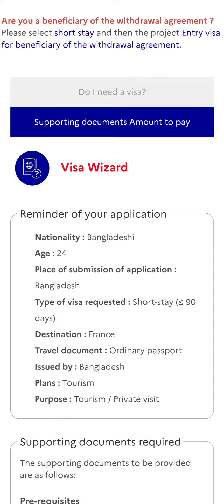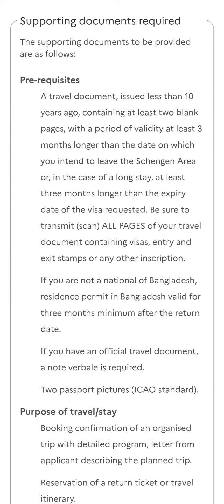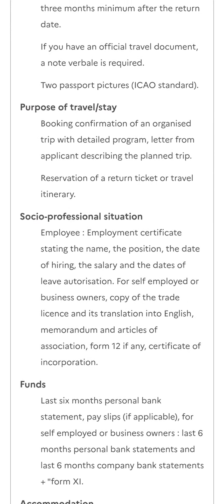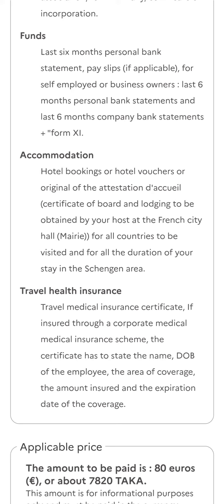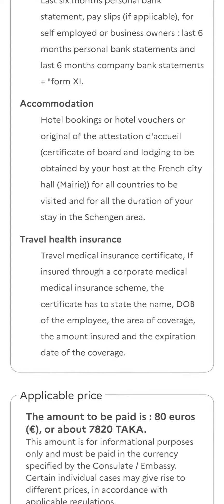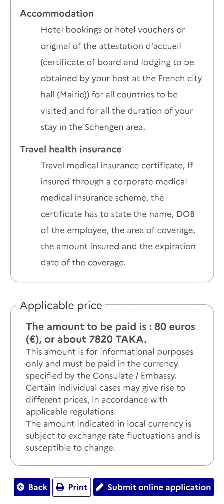Now you're given details and the documents you'll require will be shown to you. Read carefully what documents you need. You'll need a valid travel document, which is your passport. For an official passport, you'll need a note verbale. Two photos of ICAO standard — there's a specific size and clear instructions you'll find on Google. You'll need booking confirmation and travel itinerary. You should book your accommodation first and get a travel agent to book your flight or provide a flight itinerary. You'll also need documents stating your socio-professional situation, your bank statements to show your funds, hotel bookings, and travel health insurance.